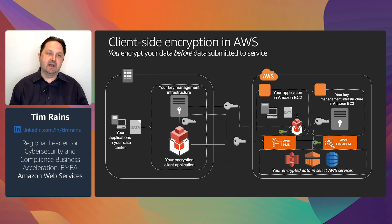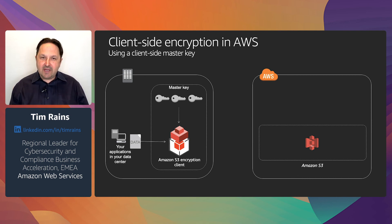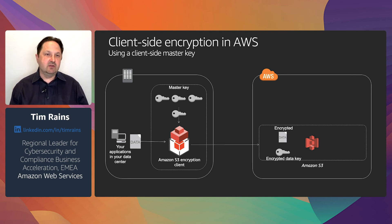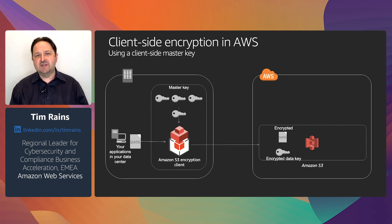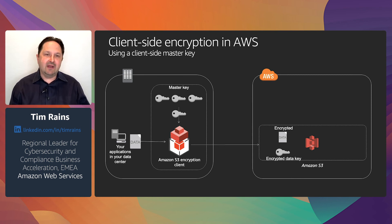Let me show you an example of client-side encryption in action. In this example, the customer has built an application that performs encryption using the Amazon S3 encryption client. The application runs in the customer's on-premises data center. The application encrypts the data using a data key, then gets a master key from the on-premises key management infrastructure to encrypt the data key. The application sends the encrypted data and the encrypted data key to Amazon Simple Storage Service (S3). Because both the data and the data key are encrypted, no one can access them without the proper decryption key, which is kept on-premises.